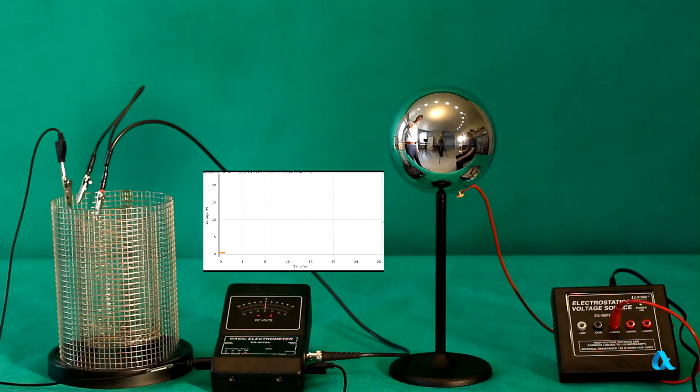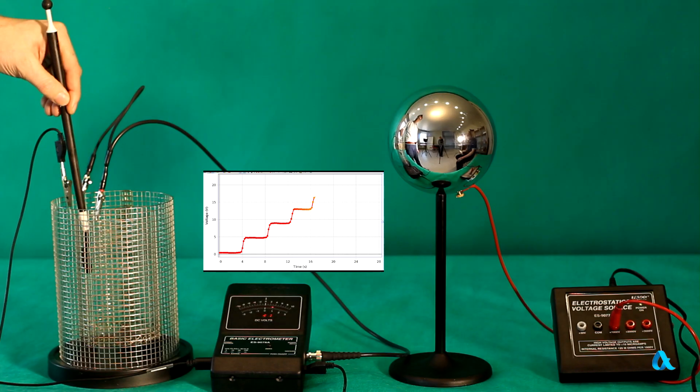Since the charge in our experiment gets fully moved from the plate to the mesh, we can increase the charge of the mesh in equal portions by repeating this action. Note that the electrometer readings increase in equal steps as well.